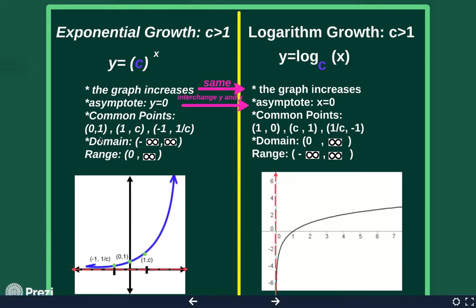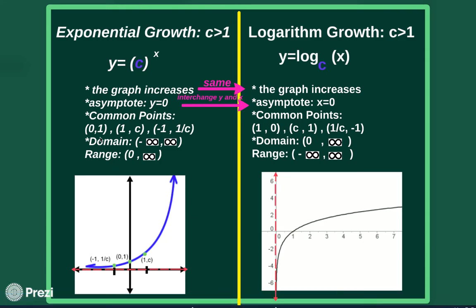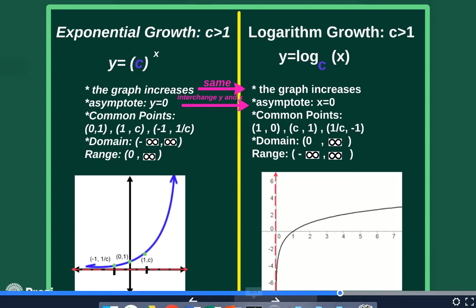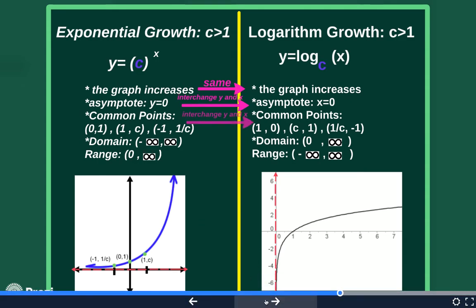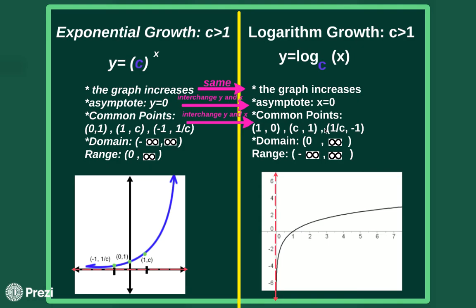Let's compare common points. To get inverse points, we interchange the original points — we flip-flop all of our x's and y values. So all of our points look very similar except our x and y's have traded spots. The point (0, 1) turned into (1, 0); the point (1, c) turned into (c, 1); and the point (-1, 1/c) turned into (1/c, -1). The points are the same — they just interchange the x and the y.